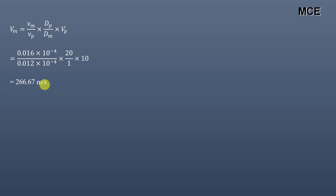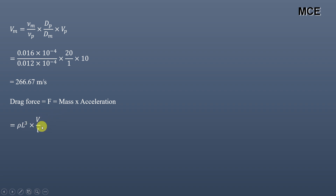The drag force is given by mass times acceleration. Mass equals density times volume, so it can be written as ρ × L³. Acceleration is velocity divided by time, which gives V²/L. Therefore, drag force equals ρ × L² × V².